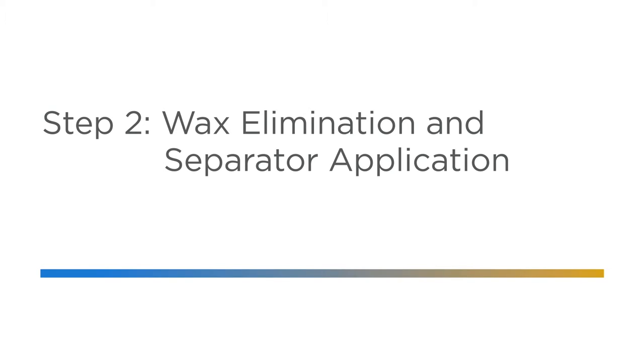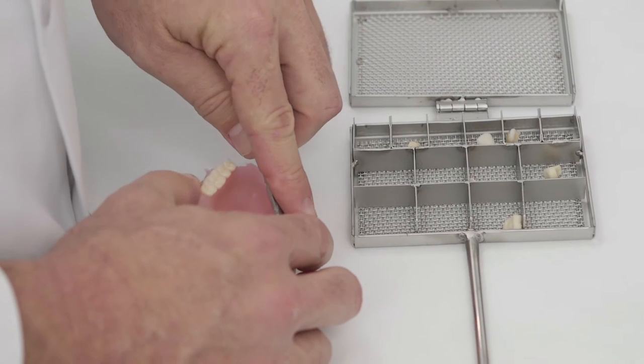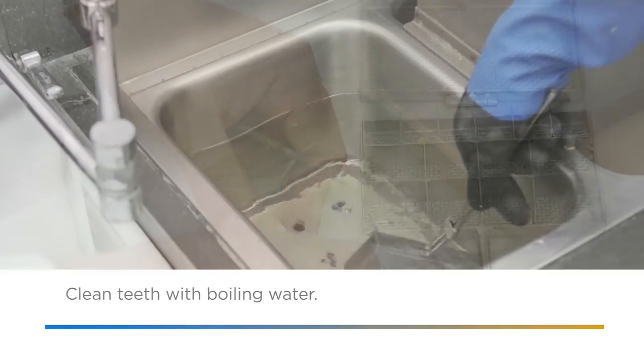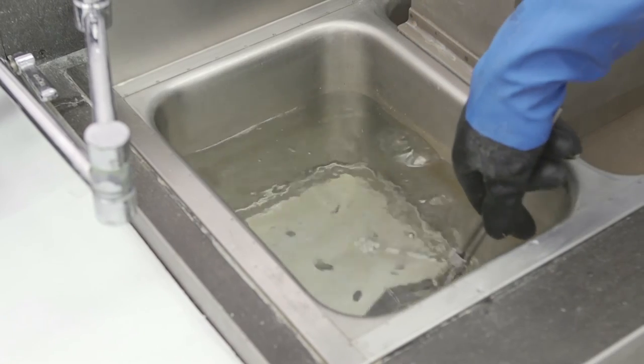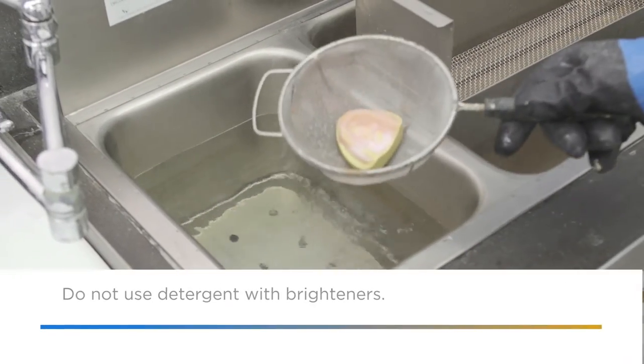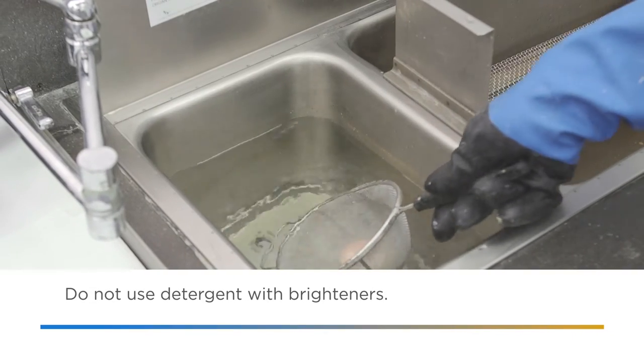The second step in the pouring process is wax elimination and separator application. First, clean teeth with the use of a tooth cage and clean boiling water. Be careful to make sure that all wax is removed from the teeth. Next, boil off the wax with clean boiling water.